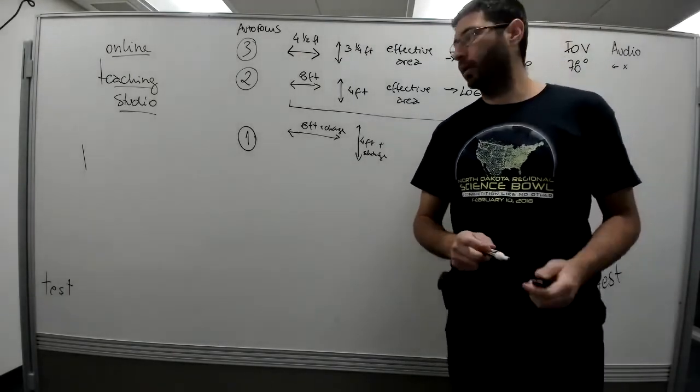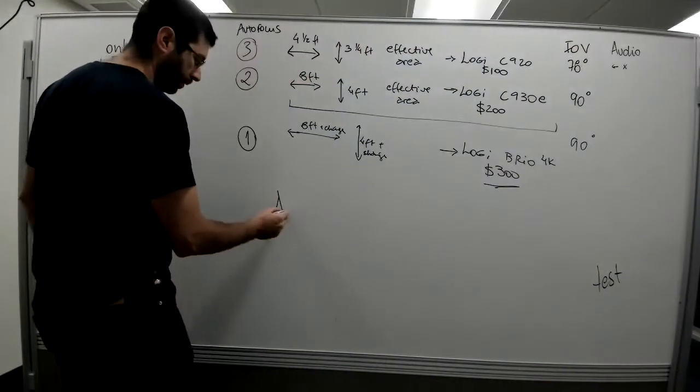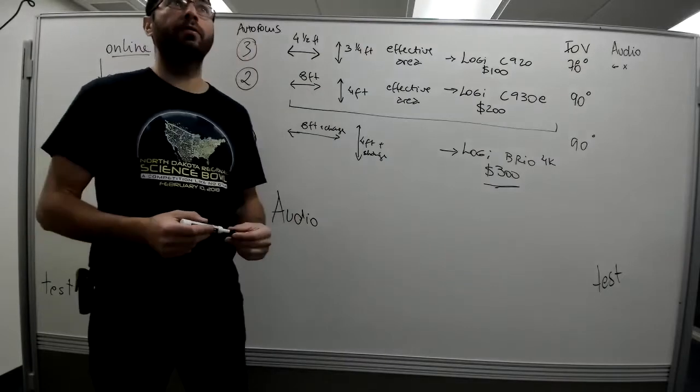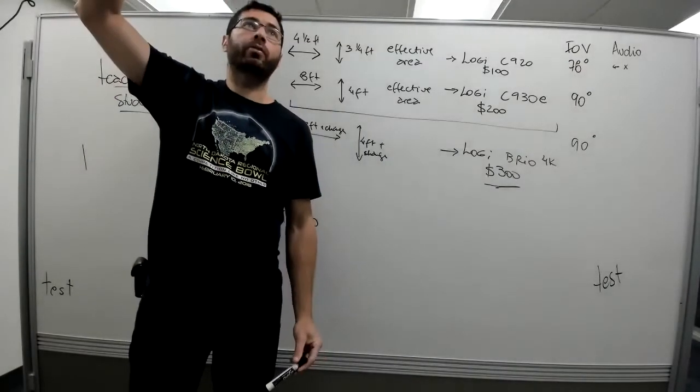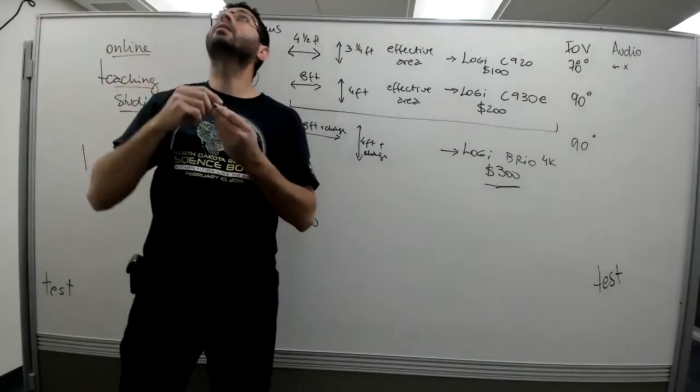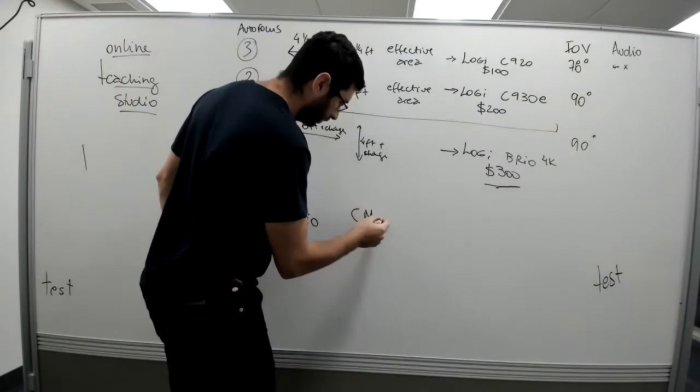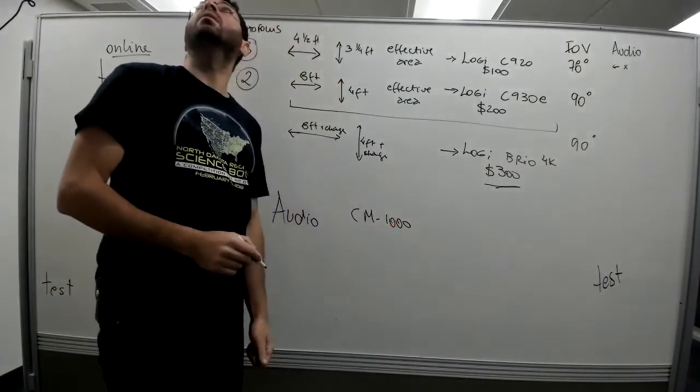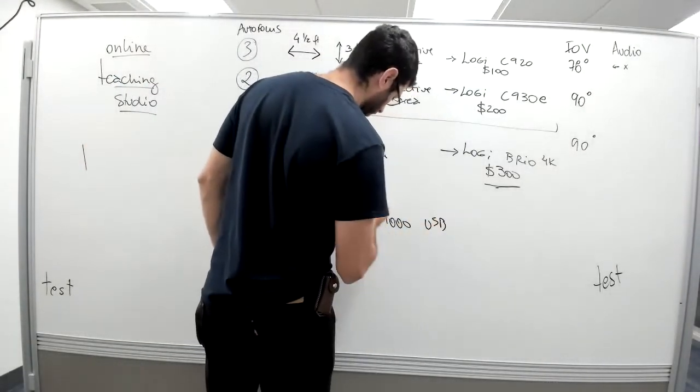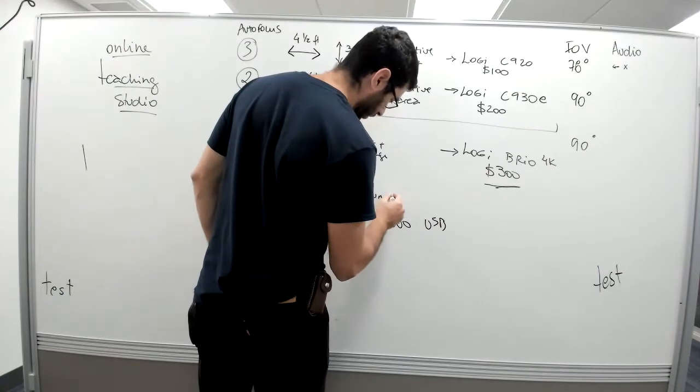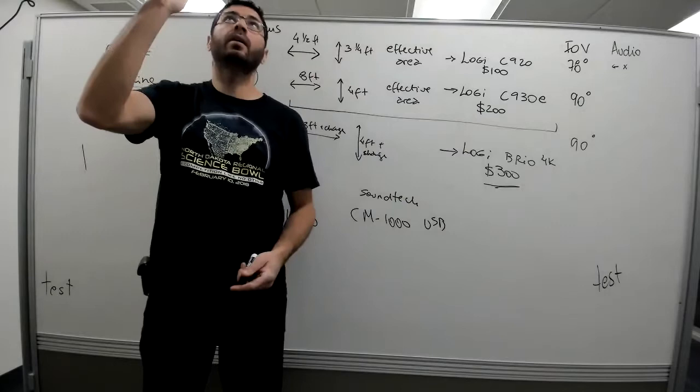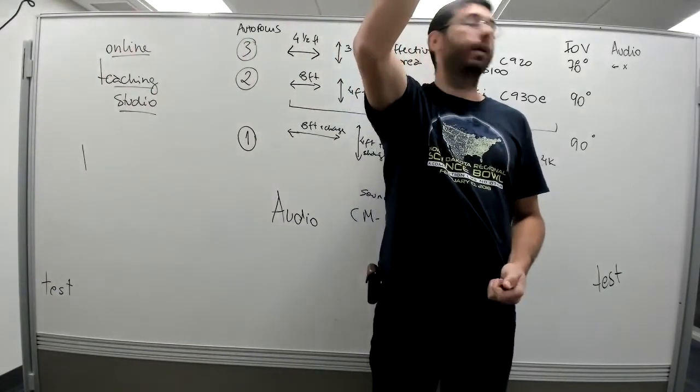So right now the test that we're doing is the audio test. This is an audio test using a microphone. I have a microphone hanging from the ceiling. The model is a CM8000 1000 USB Sound Tech. This is the microphone that I have hanging right here, supposed to be hanging right in the middle.